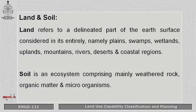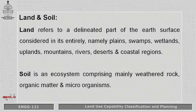What is meant by land? Land refers to the delineated part of the earth's surface, considered in its entirety — all these plains, swamps, wetlands, uplands, mountains, rivers, coastal regions, and deserts also all come under land. But what is meant by soil? Soil is the ecosystem comprising mainly weathered rock, organic matter, and microorganisms.